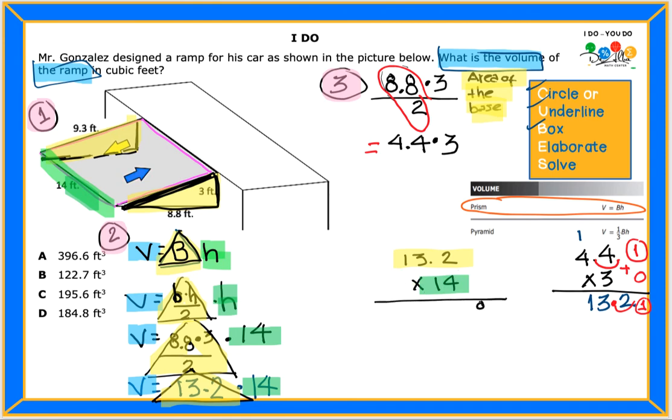So 13.2 times 14, and 14 is the height of the prism. Let's multiply. 4 times 2 is 8. 4 times 3, 12. 2 and we carry 1. 4 times 1, 4 plus 1, 5. Let's use a placeholder. 1 times 2, 2. 1 times 3, 3. And 1 times 1, 1. Let's add: 8 plus nothing, 8. 2 plus 2, 4. 5 plus 3, 8. 0 plus 1, 1. Now let's look at the digits and see how many decimals they have. Here we have one decimal. On the 14 we have none. So the total is one place value that we got to move from right to left. So what it means is that the volume after we multiply 13.2 times 14, that's going to be equal to 184 and 8 tenths.